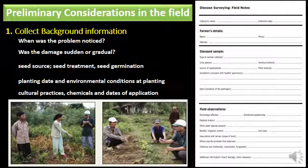It is very important to collect information about the growing environment to which the affected plant has been exposed, because environmental factors including extreme temperature, freezing, rainfall, drought, lighting, and winds are abiotic factors that can be important to the problem. Cultural and maintenance activities can also be significant — what pesticides or other chemicals have been applied, at what rate, and when. All of this information can be noted in disease severity field notes to support continued diagnosis in the lab.